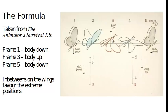So frame one, the body's going to be going down. Frame three, the body is up. Frame five, same as one, the body is down again. And the wings are doing the opposite. So when the body is up, the wings will be down. When the body is down, the wings will be up. And then we need some breakdown poses in between.